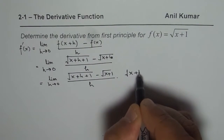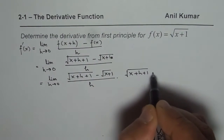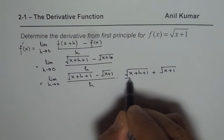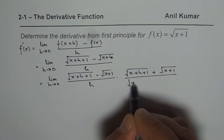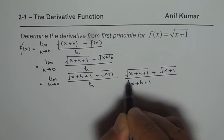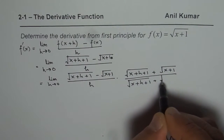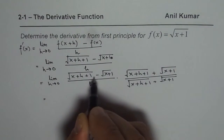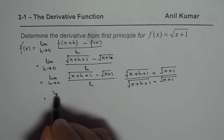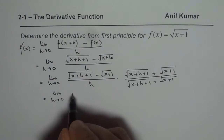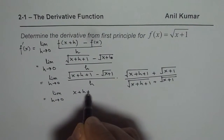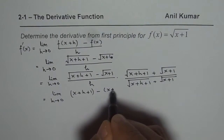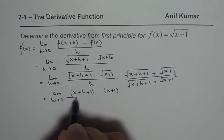We multiply by the conjugate: [square root of (x plus h plus 1) plus square root of (x plus 1)], divided by the same expression. In the numerator, the difference of squares gives us (x plus h plus 1) minus (x plus 1).